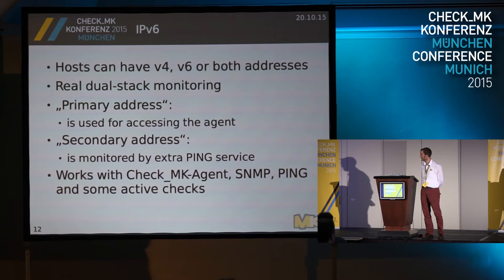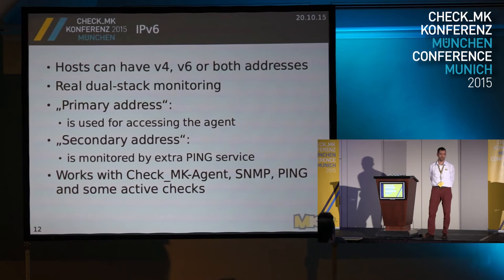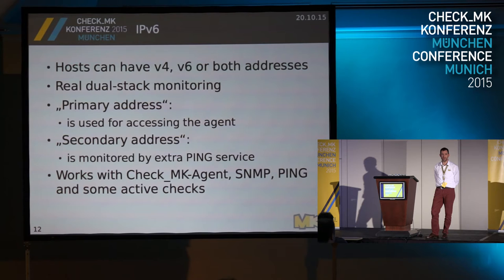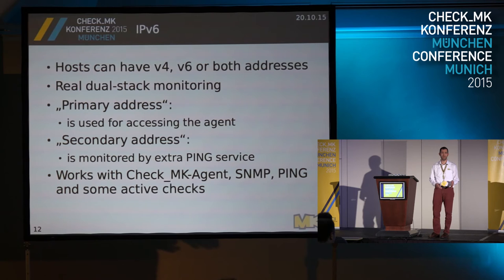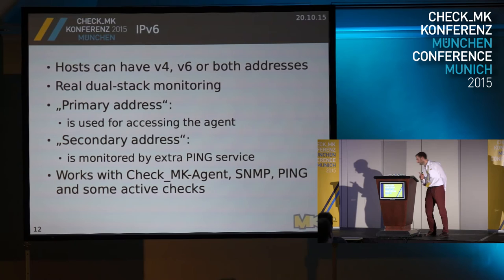This does not only work with the Check MK agent. Changes were made to the Windows agent, we had to adapt a lot of things in the code — like the ONLY_FROM specification for networks from which the agent has to be accessible. Also in the SNMP machinery, IPv6 is supported correctly — for inline SNMP as well as for the classic SNMP.